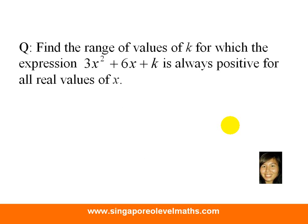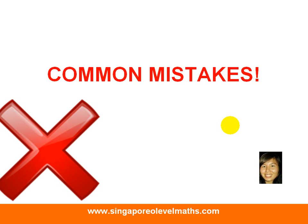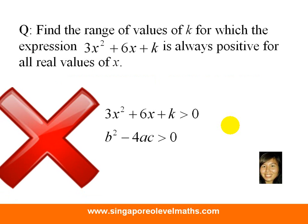Now, what are some of the common mistakes for this question? What happened is many students will actually translate the question 3x² + 6x + k is always positive to be more than 0. And from there they will conclude, since it's more than 0, b² - 4ac must also be more than 0. This is absolutely incorrect.